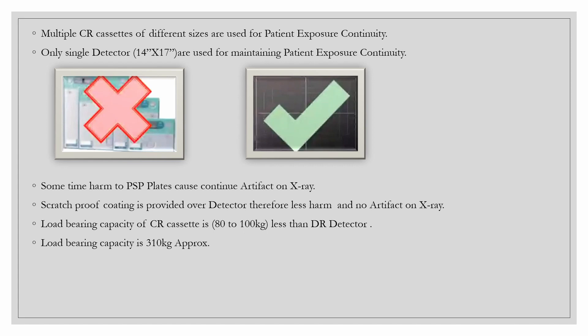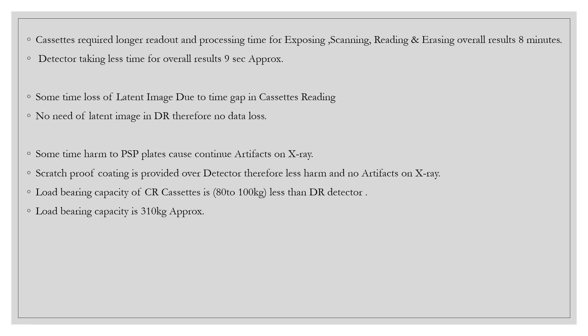Sometimes harm to the PSP plate causes continuous artifacts on X-ray. In DR, a scratch-proof coating on the detector provides less harm and no artifacts. The load-bearing capacity of CR cassettes is around 80 to 100 kg, which is less than the DR detector's load-bearing capacity of around 300 kg — a big difference. CR cassettes also require longer readout and processing time for exposing, scanning, reading, and erasing — around 8 minutes.